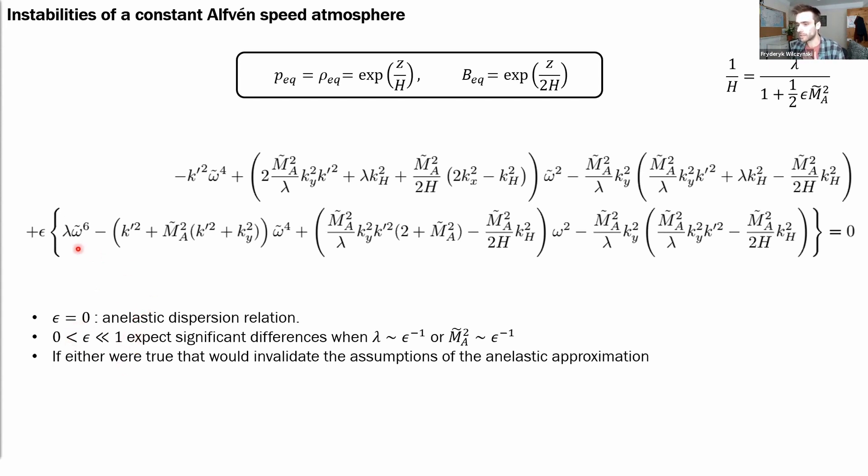the only way these terms in the lower line contribute to the dominant balance is when either lambda or this Mach number are very large quantities. And it turns out that if either were true, that would be breaking the assumptions of the anelastic approximation.